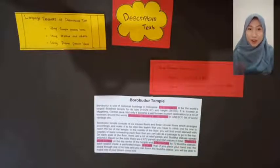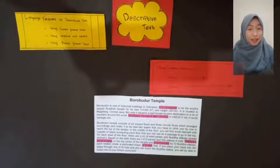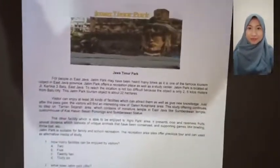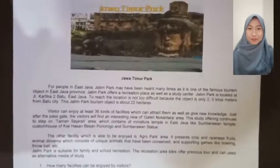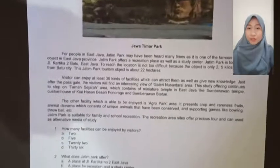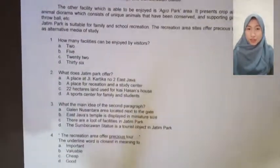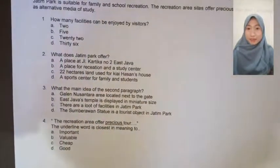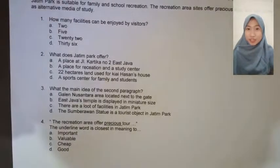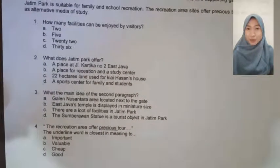Agar teman-teman semua semakin paham, mari kita perhatikan teks berikut. Setelah itu, kita kerjakan soal-soalnya bersama. First question: How many facilities can be enjoyed by visitors? A. 2, B. 5, C. 22, D. 36.